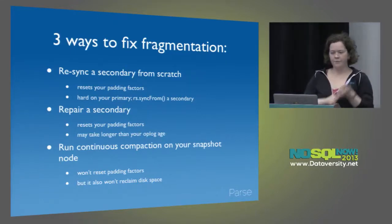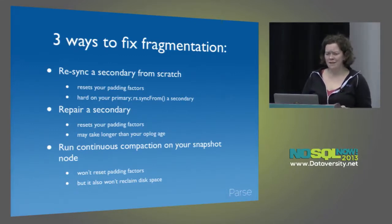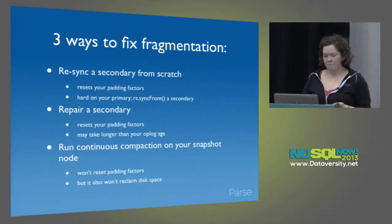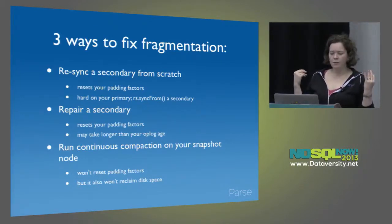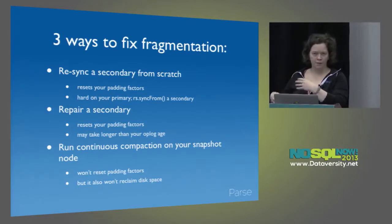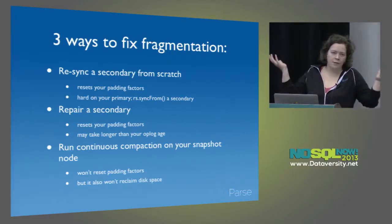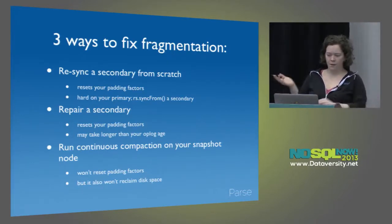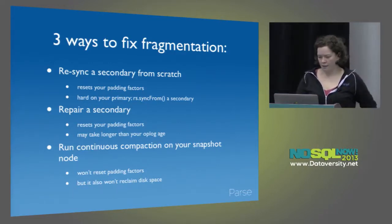Three ways to fix fragmentation: you can do the initial sync from scratch, which resets your padding factors but is really hard on your primary unless you sync from the secondary. You can take a secondary offline and repair it, which does basically the same thing — could take a week and may not be able to catch back up. Or — and this is the solution we've found — run continuous compaction of all collections on your snapshot node. Whenever you restore a new node, your snapshots are always freshly compacted and you just don't have to worry about it.